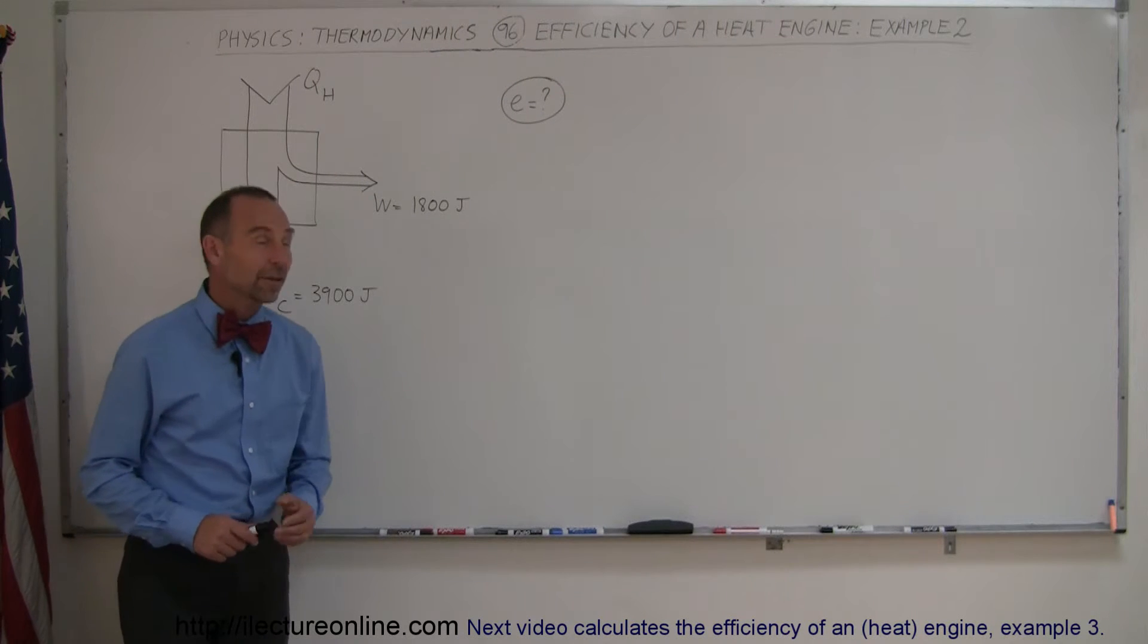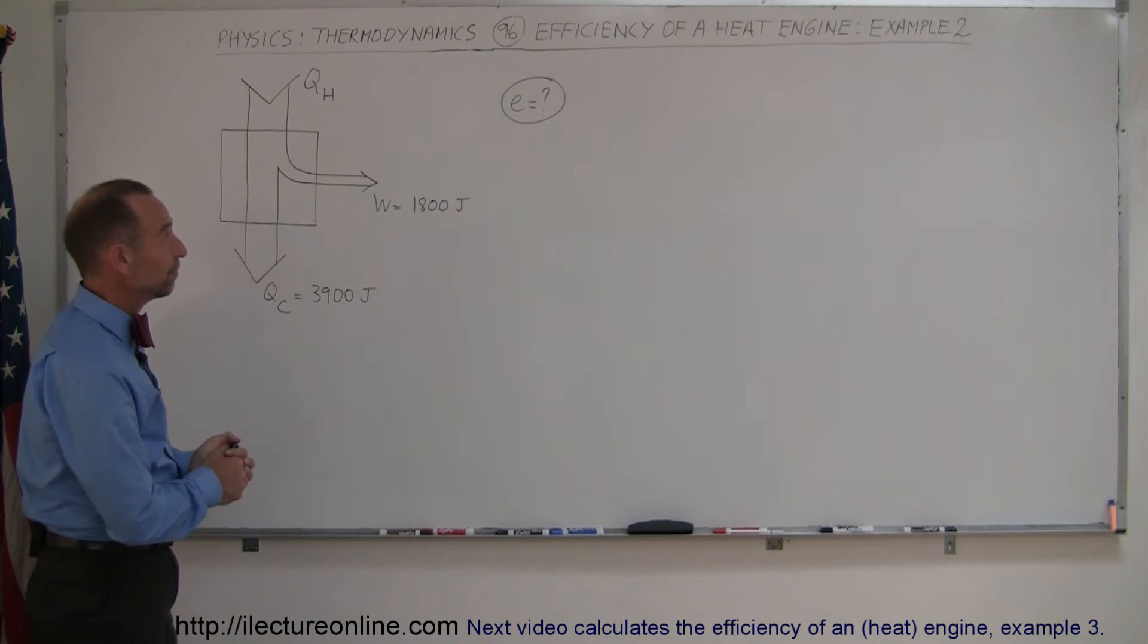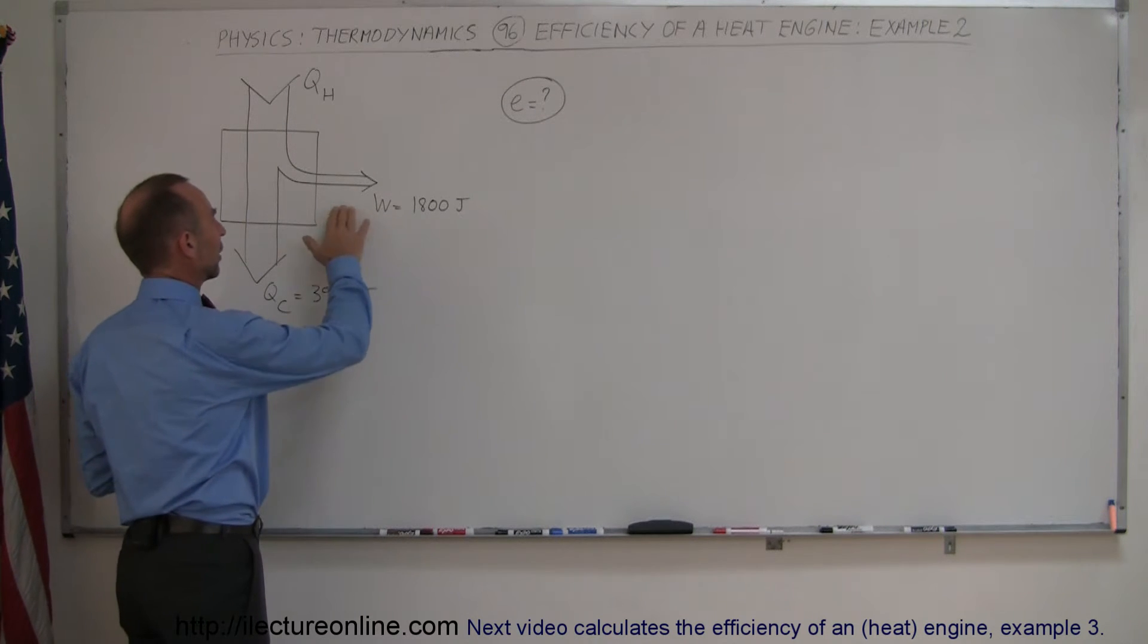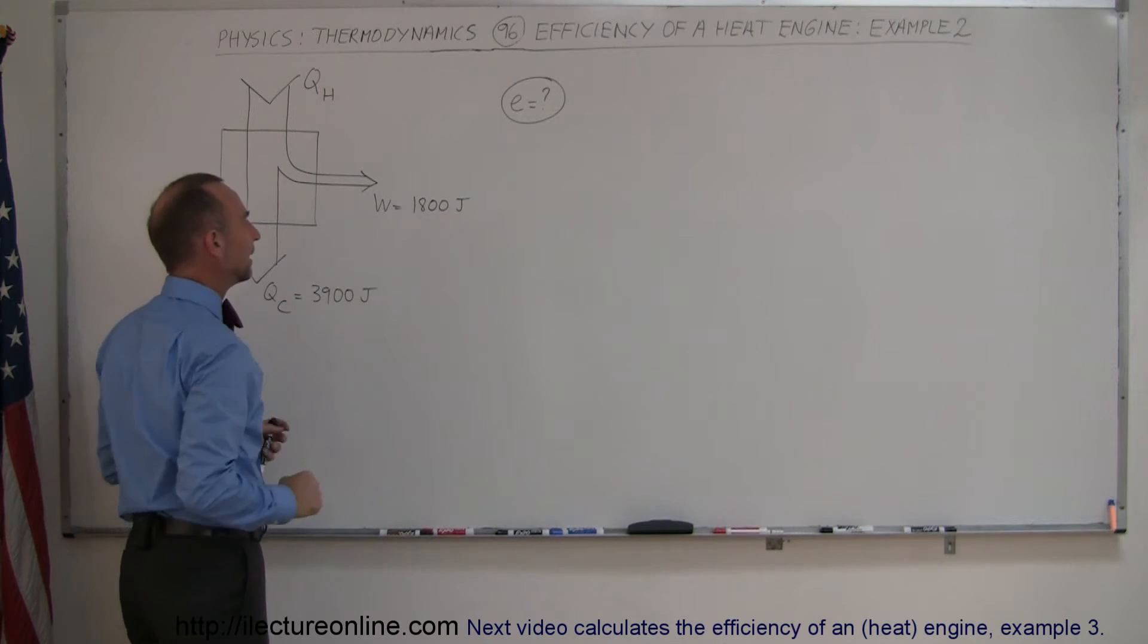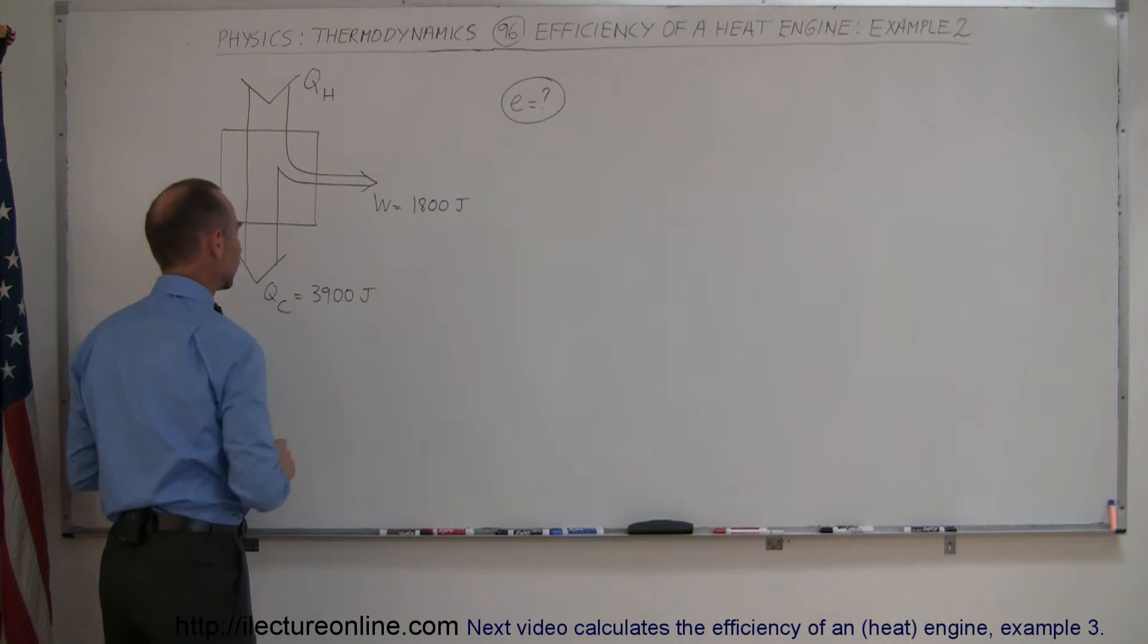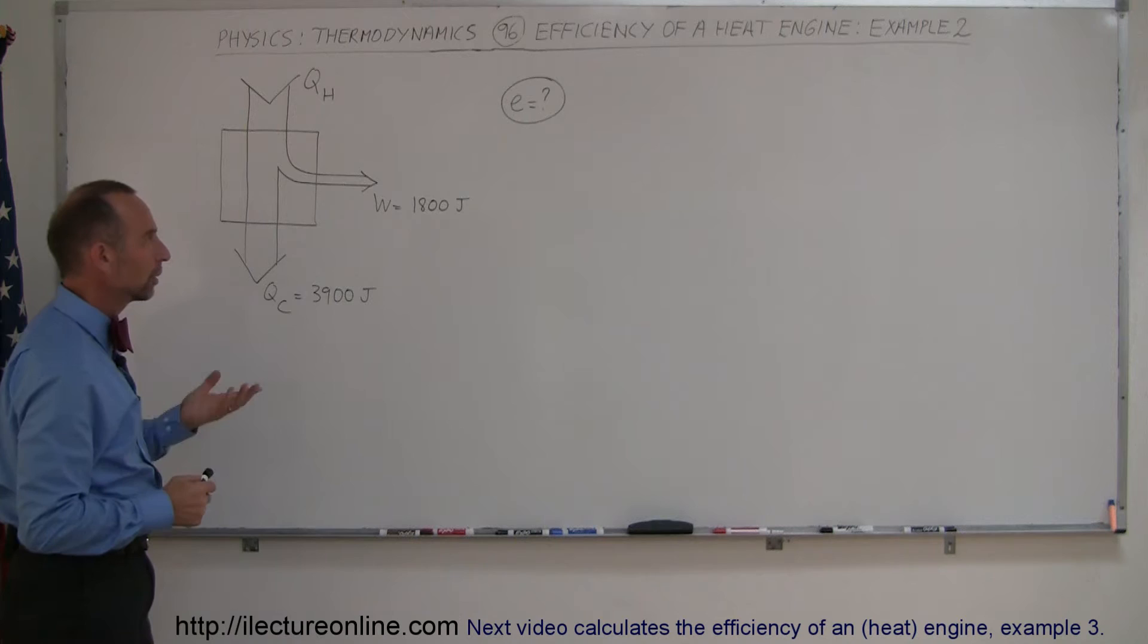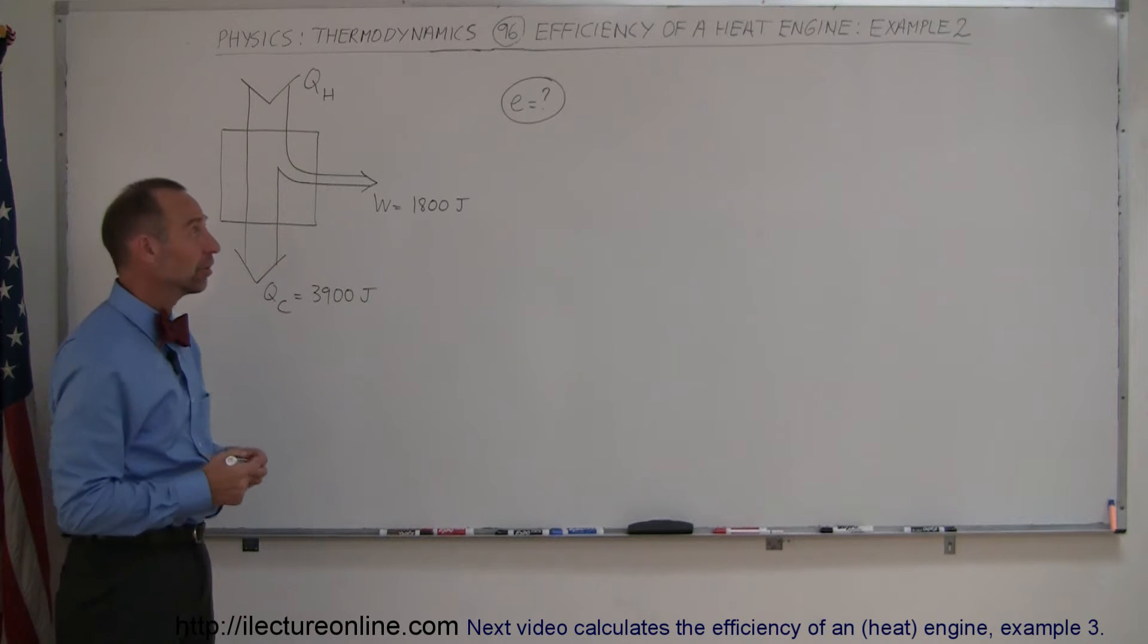In our second example of how to find the efficiency of a heat engine, we have an engine that puts out 1,800 joules of work and expels 3,900 joules of heat to the cold reservoir. And the question is, what is the efficiency of this engine?